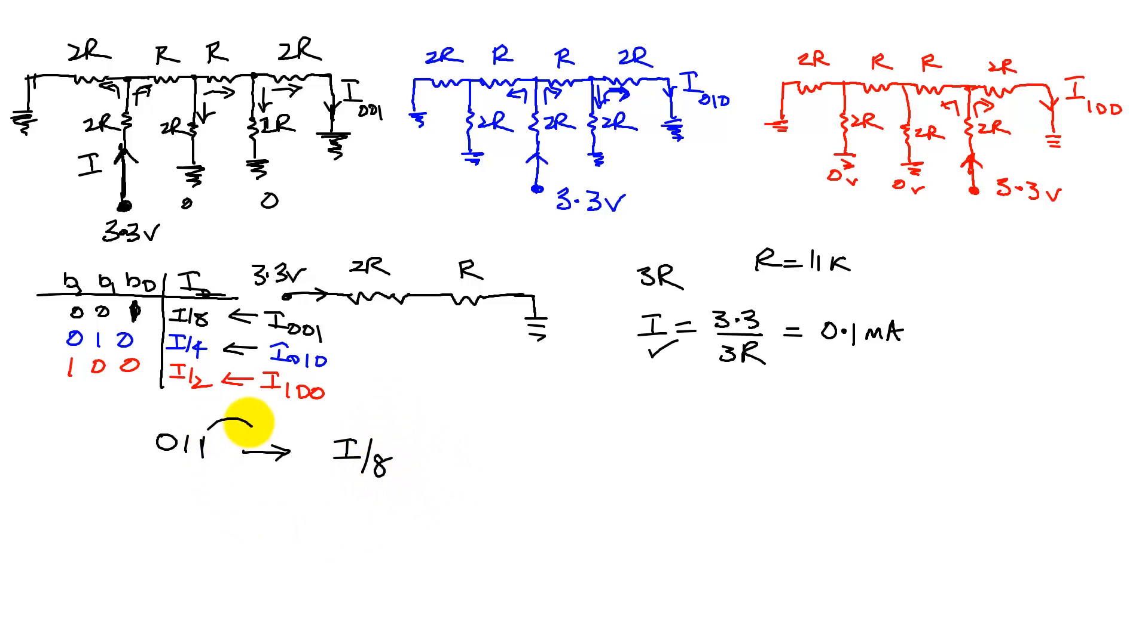Then this will give me a net current of I over 8, which is because of this bit, which is a 001 scenario, plus the 010 scenario, which is I over 4.